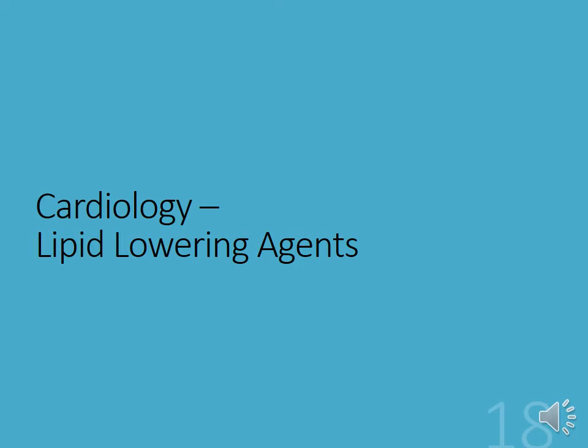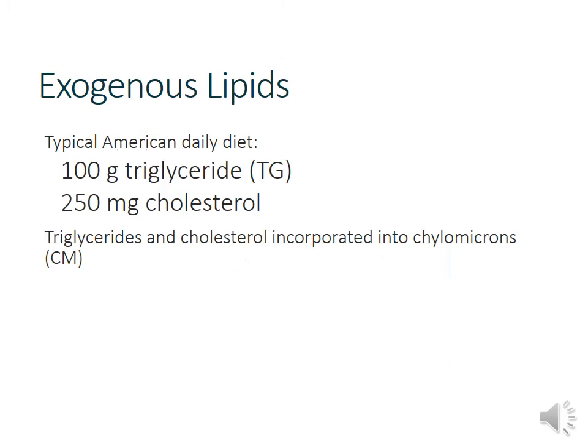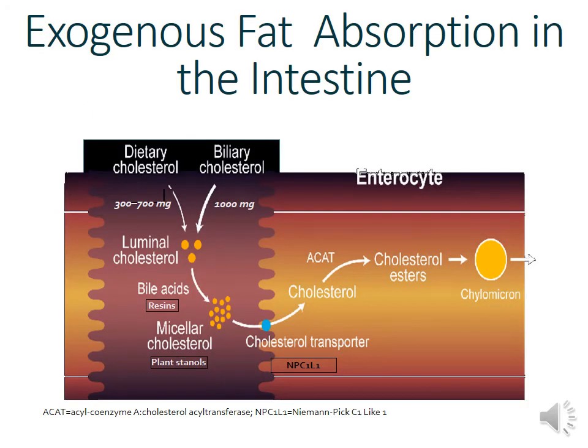Now we'll talk about lipid-lowering agents, the bulk of today's topics. There are two sources of dietary fats: endogenous cholesterol production and dietary intake. Exogenous lipids are ingested as triglycerides or cholesterol. As they're metabolized, they're incorporated into chylomicrons, which are precursors to LDL cholesterol. We'll cover the broad strokes of how these cholesterol components are regulated since this is important for understanding how our drugs work.